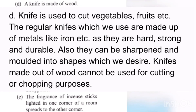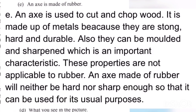Fourth: A knife is made of wood. Students, the answer is given on the screen. You can take a screenshot or copy it down. Fifth: An axe is made of rubber. It would not be useful for cutting. The axe should be made of metal so that it can cut wood, and it is durable so it can be used repeatedly.